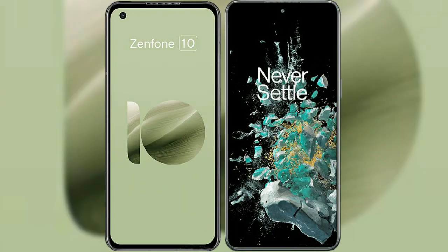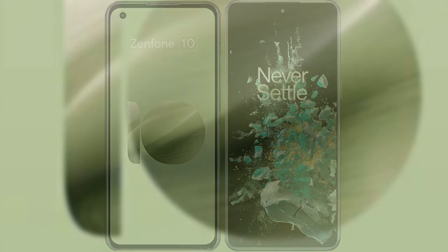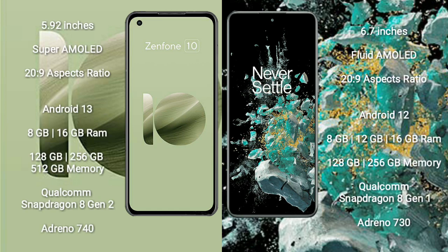I will compare the new Asus Zenfone 10 with OnePlus 10T. Asus Zenfone 10 comes with a 5.92-inch Super AMOLED display with an aspect ratio of 20:9. OnePlus 10T comes with a 6.7-inch flat AMOLED display and the same 20:9 aspect ratio.